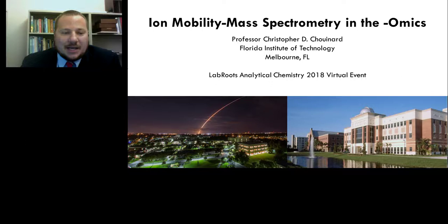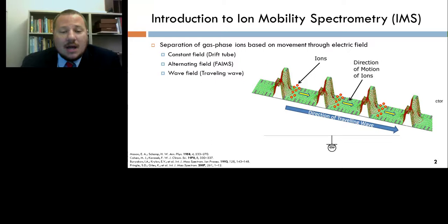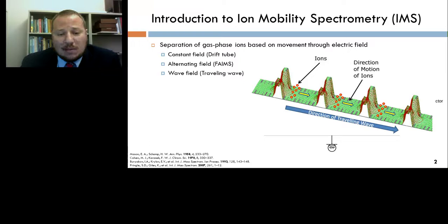Thank you for the introduction, Alexis. Today we're going to be talking about a tandem technique: ion mobility spectrometry coupled with mass spectrometry, and especially for its use in the biological omics — being metabolomics, lipidomics, and proteomics. I'd like to start by going through some of the very basics of ion mobility spectrometry, a technique that's been around for several decades but has really come into vogue for omics studies over the last couple of decades, thanks to fundamental research and broad-scale commercialization.